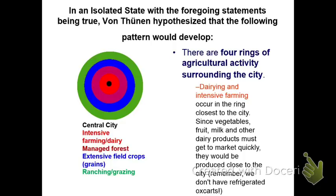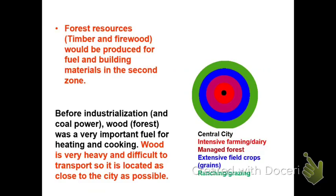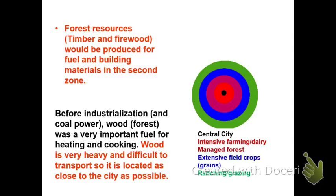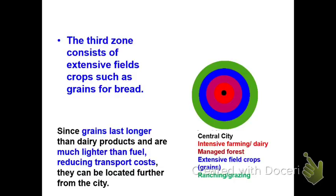In the isolated state with the foregoing assumptions stated at the very beginning, we would have this pattern develop. The four rings of agricultural activity have dairy and intensive farming located just outside the center city. As we move out, we're going to look at things like timber, which takes place just outside the dairy and intensive activities. We have to remember this was before industrialization, so wood was our natural fuel source. Outside of timber, our third zone consists of extensive-type crops — grains most specifically.